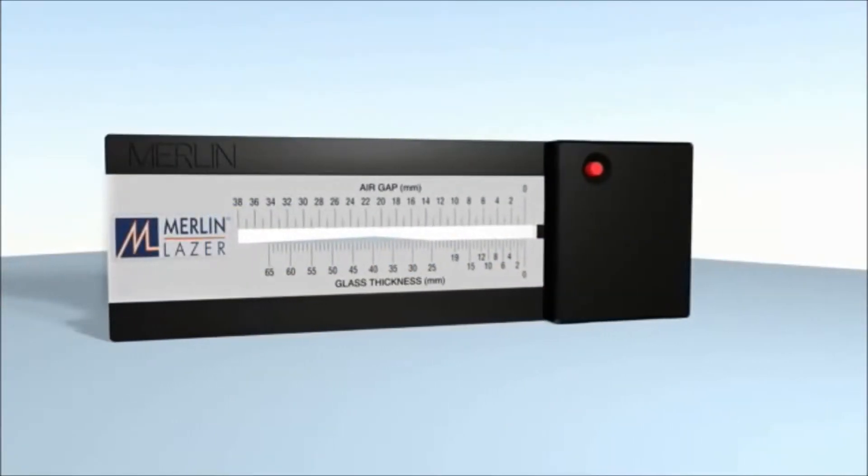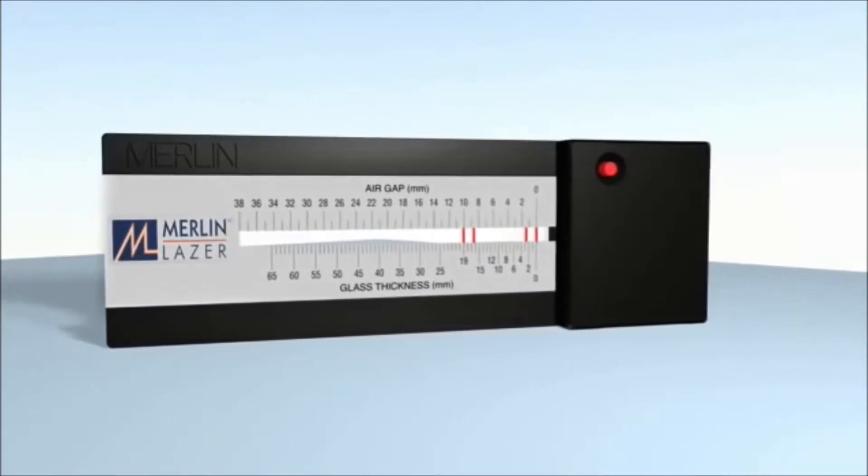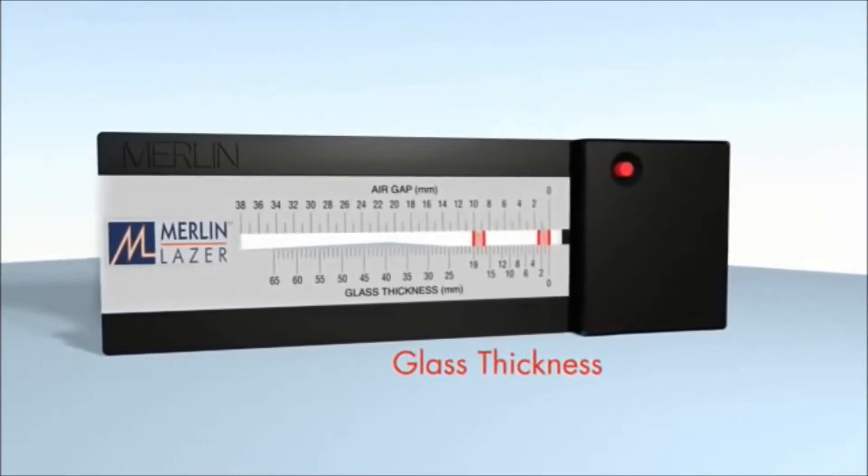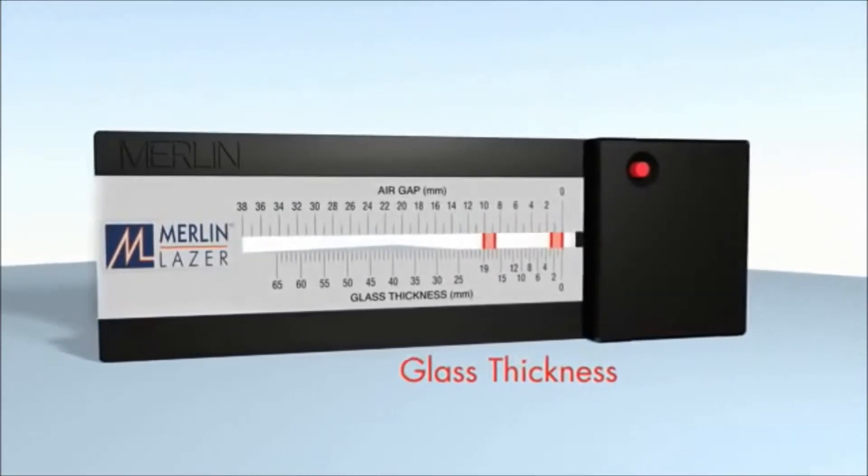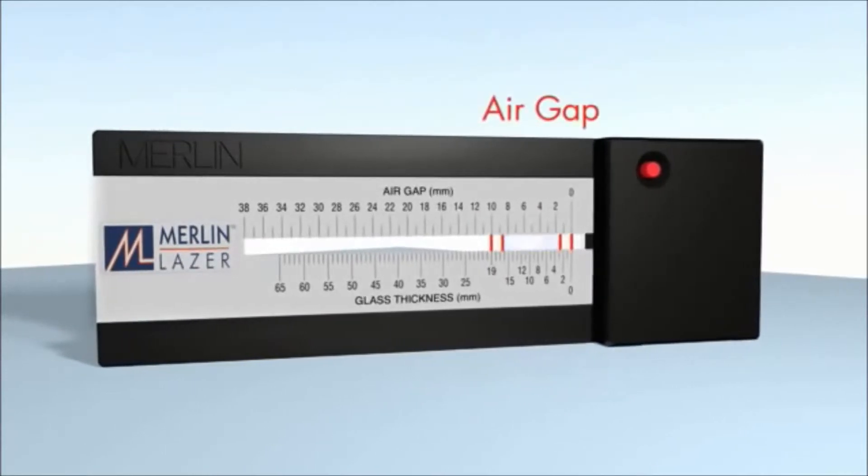When taking measurements with the Merlin laser gauge, glass and air gap thickness are displayed on the calibrated scale as a visual representation of the cross section of the glass or unit being tested.